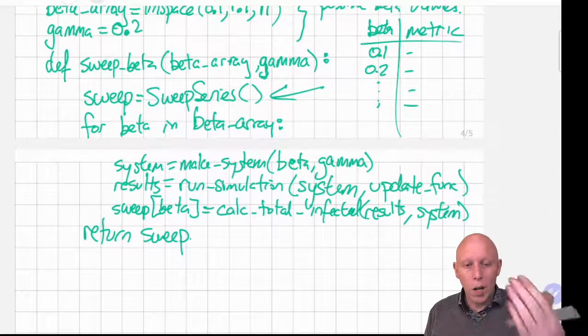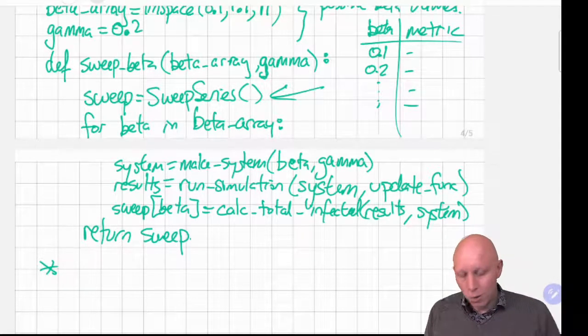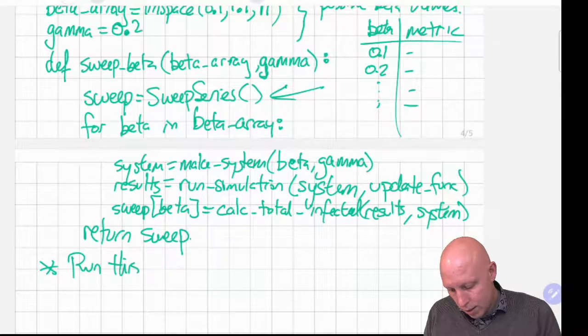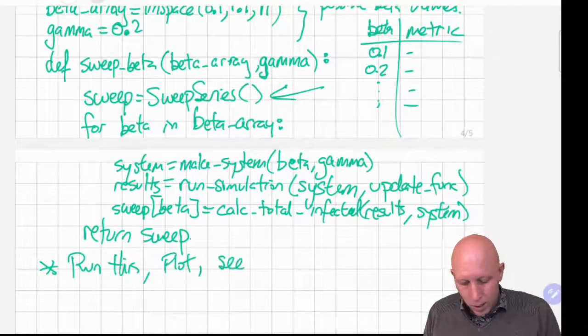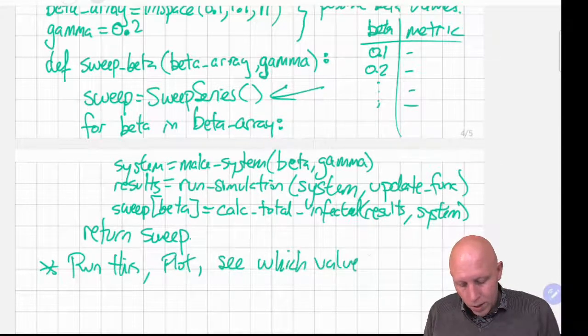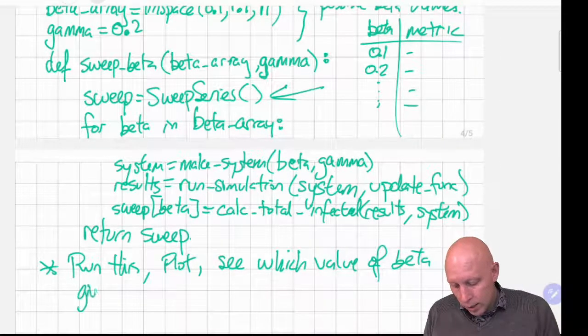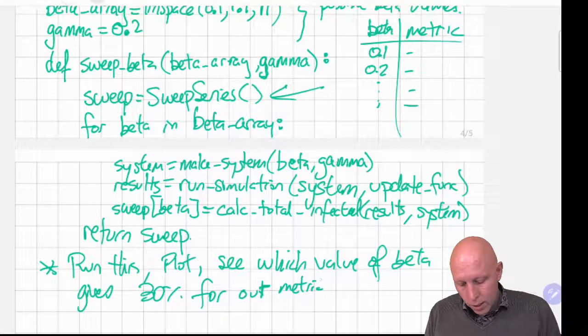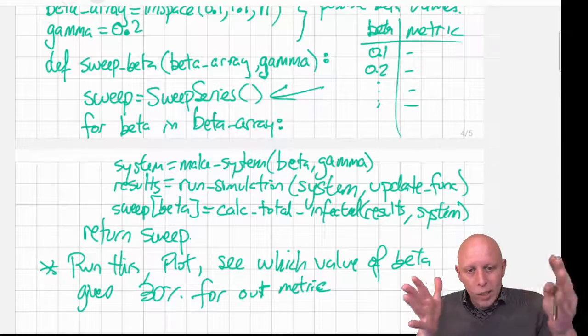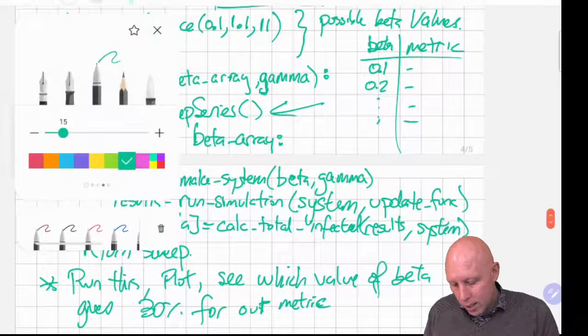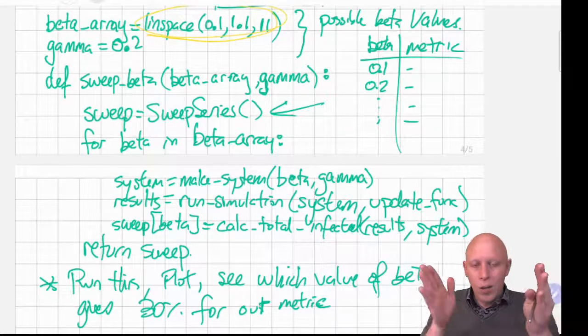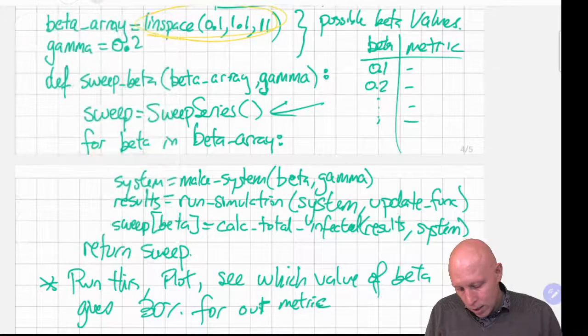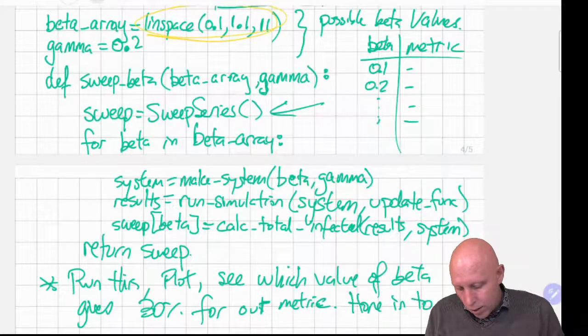And then whatever comes out of this we'll want to plot it. So this is what we're going to do over in Python. Run this code and plot, see which value of beta gives 30 percent for our metric. And what we'll actually do is we'll take a range and we'll hone it even further. So we'll refine this linspace object so that instead of being from 0.1 up to 1.1, we'll hone in on a better range and then we'll get an even better approximation.